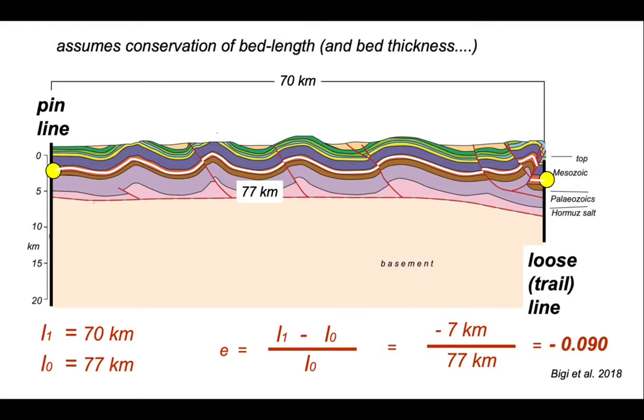In this, there's an assumption that we have conserved bed length or bed thickness. There's no distortional strain along the bed. So a simple line length measurement along the length of that sinuous white line that we've made of 77 kilometres is representative of the length L0. It needn't be like that.